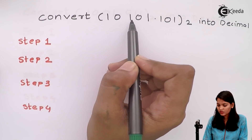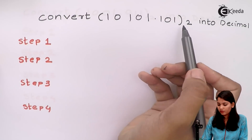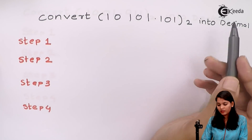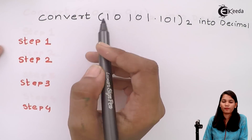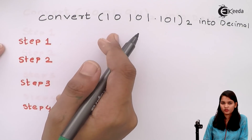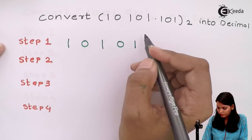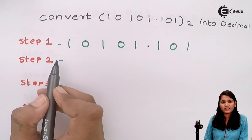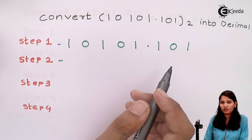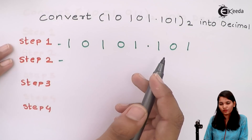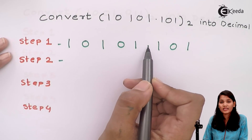Let's take an example: convert 1 0 0 1 0 1 . 0 1 0 1 (base 2) into decimal. Step 1: write down the given binary number. Step 2: write down the weightage values. As always, start from the right hand side — but this time, after the decimal point.